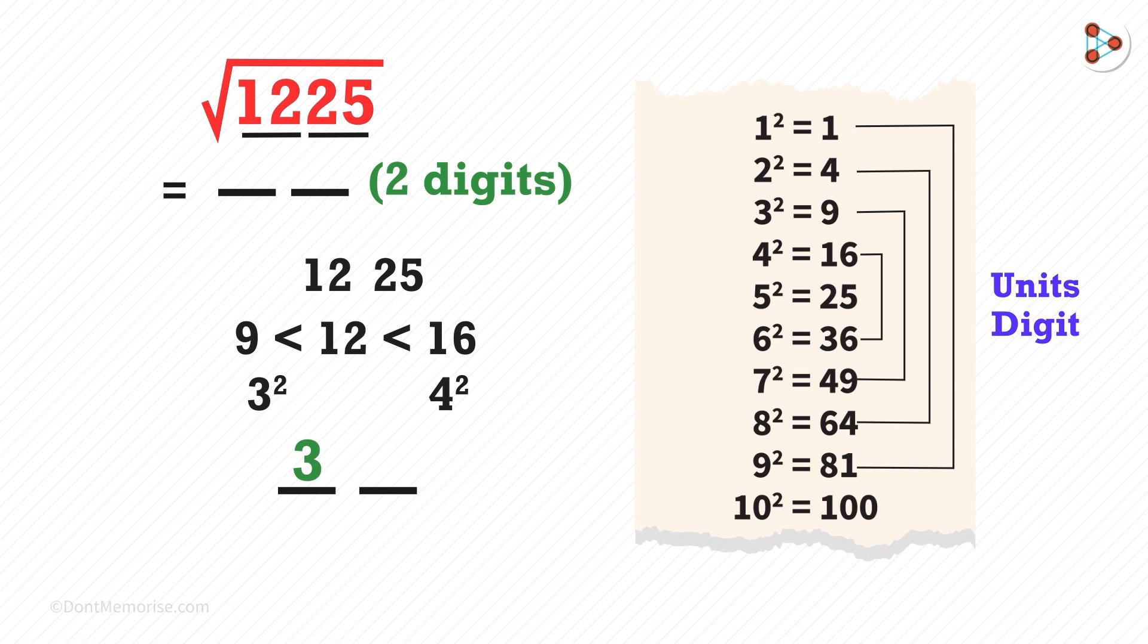What will the units digit be? The ending of this number is 5, so we know that the units digit will be 5. So you get the answer as 35.